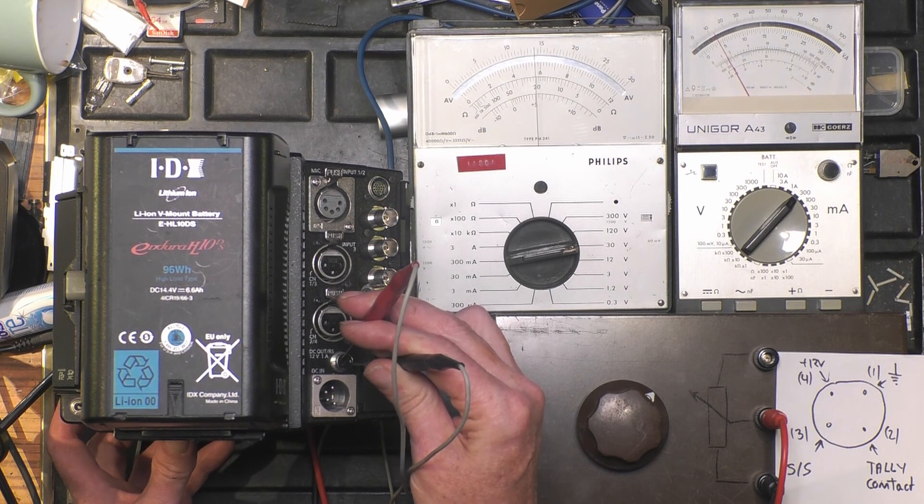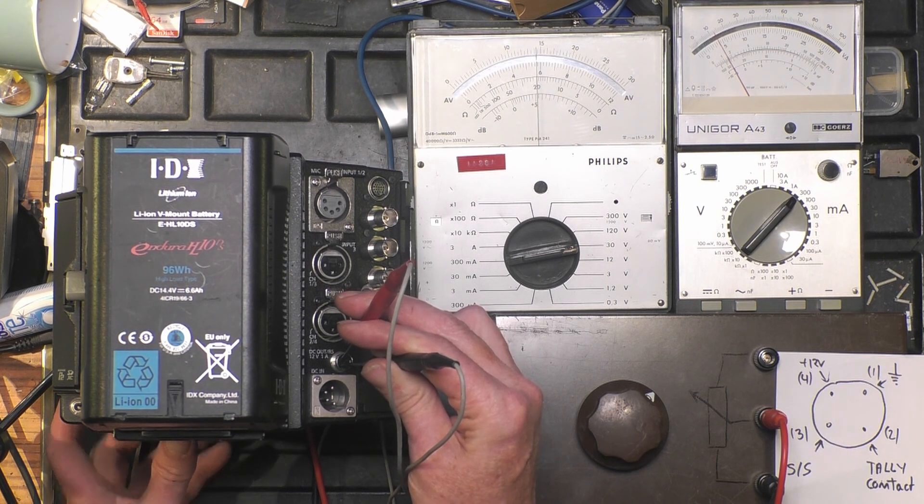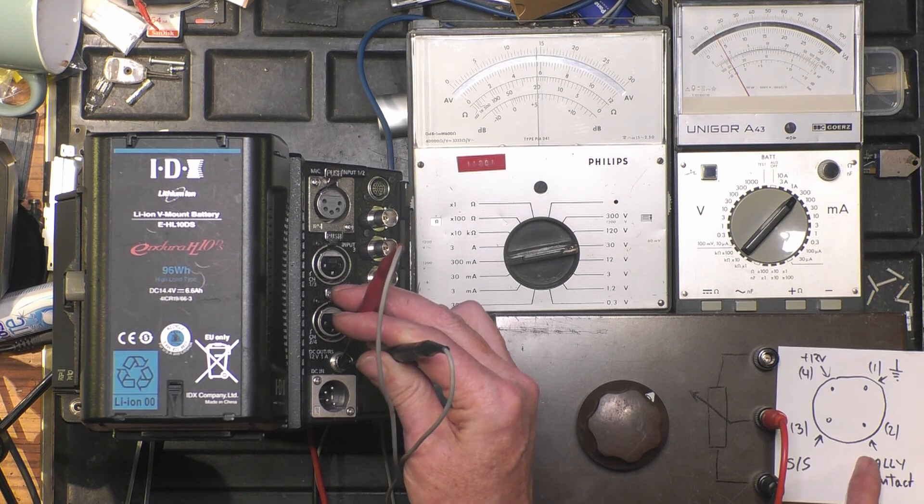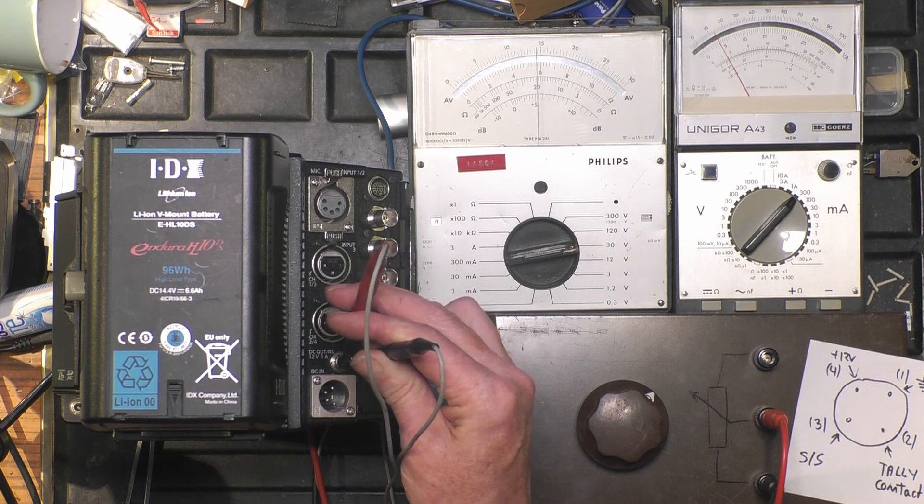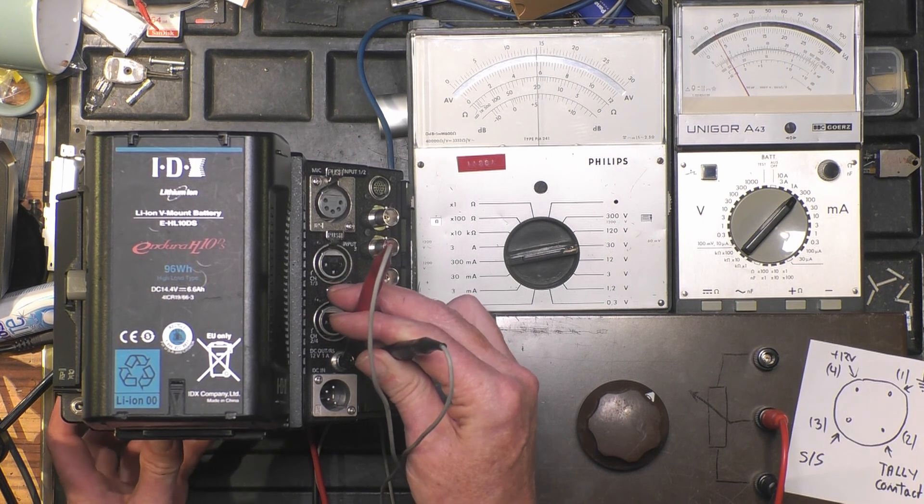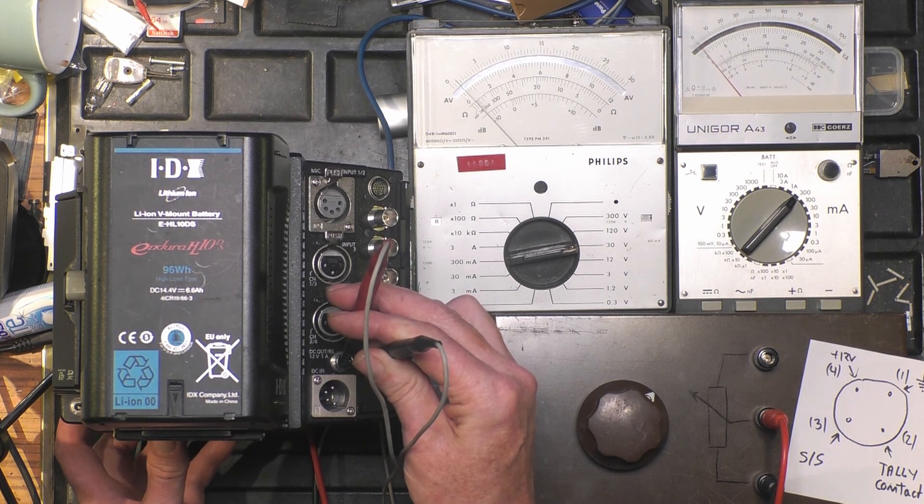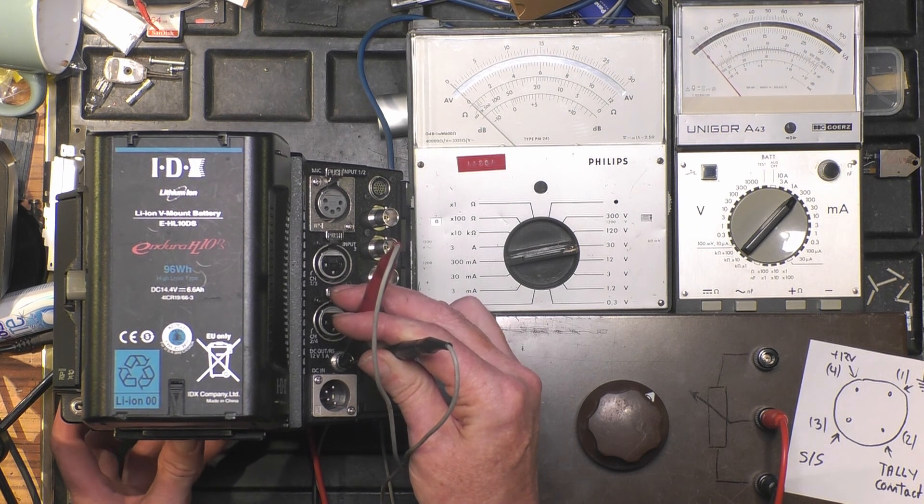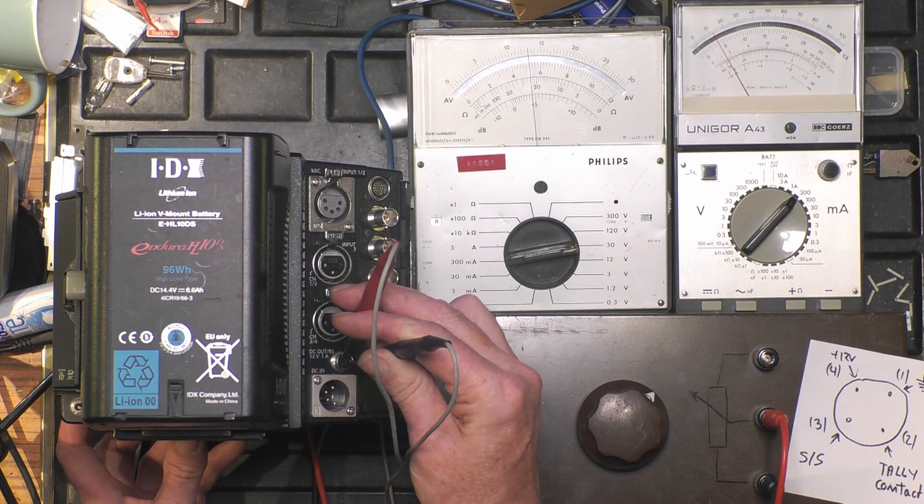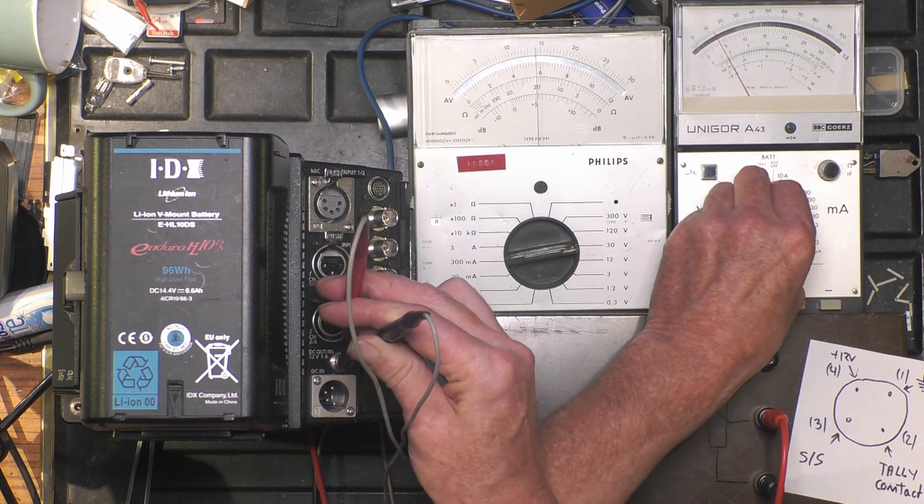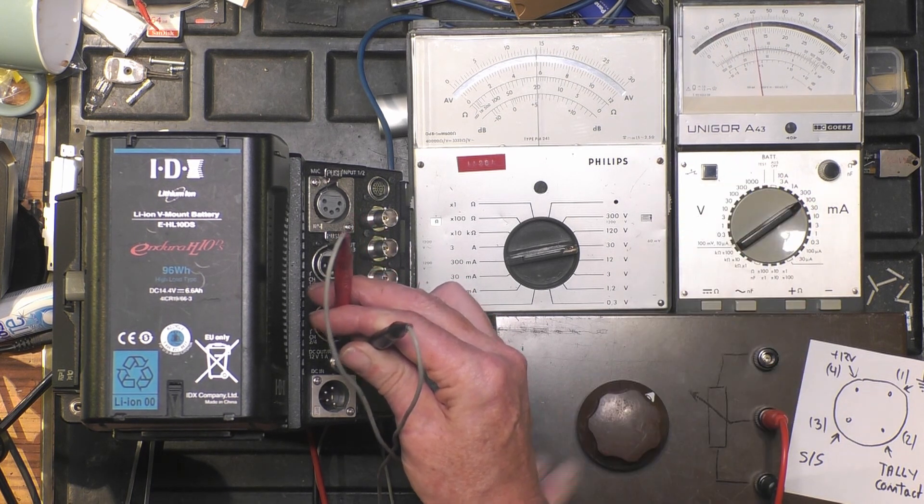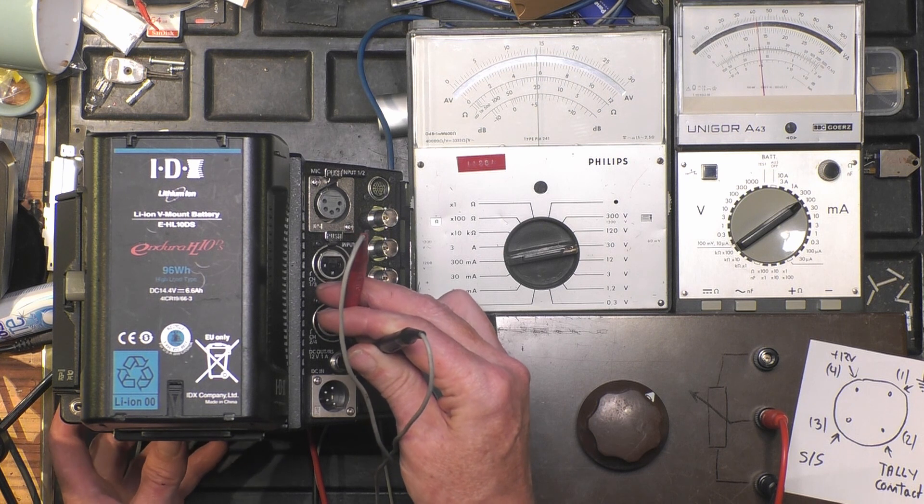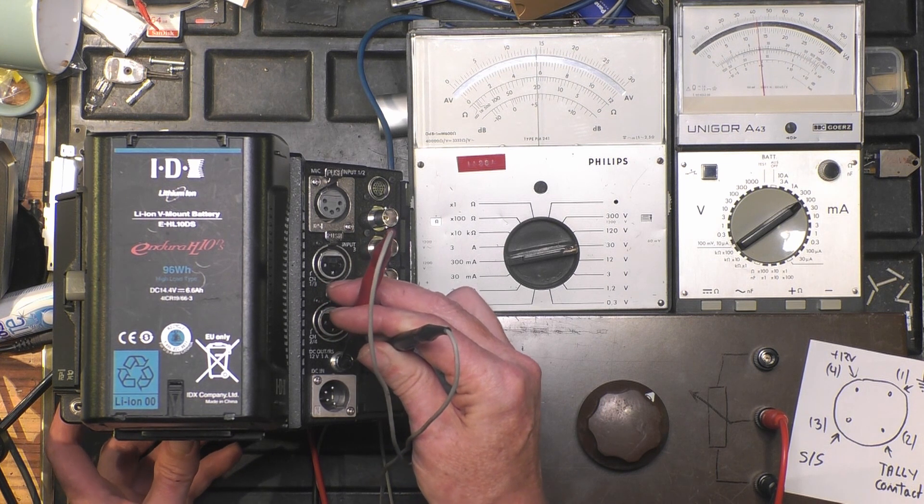And there we get our 12 volt. So the tally contact is now connected to the ground level, so the voltmeter sees the 12 volt. We stopped recording, we started again. So yes, we can confirm this four-pin Hi-Rose is in healthy condition. Thank you for watching this video.